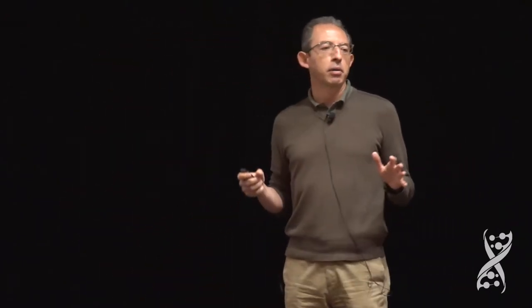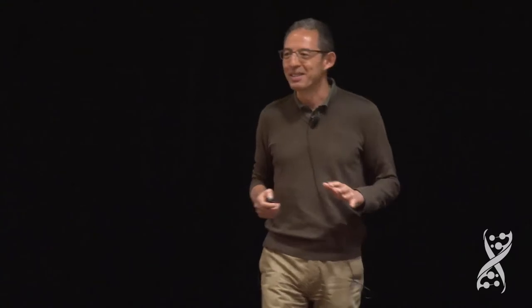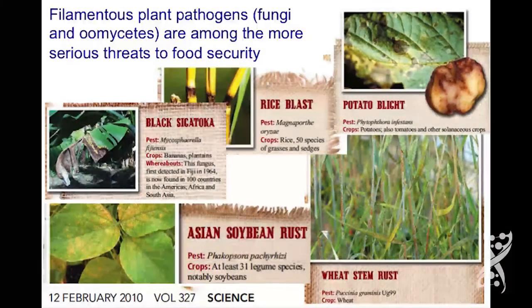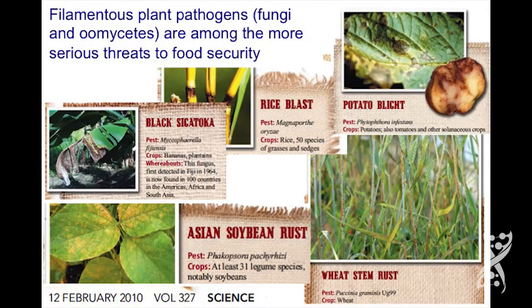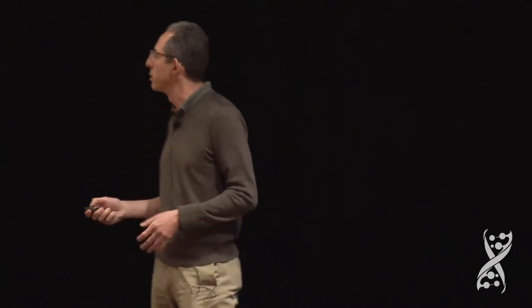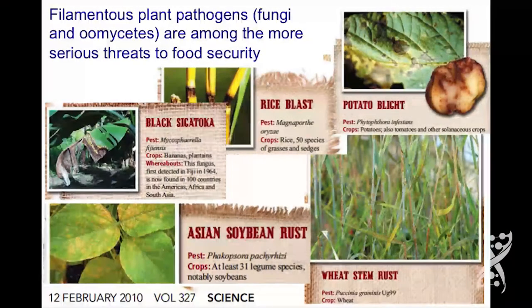Now, I know what you're thinking — you might not trust everything published in Nature with all the high-profile retractions. Well, the same thing has been published in Science. Science went through a similar exercise and identified the 'big seven' — the seven most important plant pathogens having the most impact on food security. Five of the seven are filamentous plant pathogens. You can recognize the usual suspects: rice blast, Magnaporthe oryzae, a very destructive fungus, and potato blight, Phytophthora infestans, which is the one I studied.